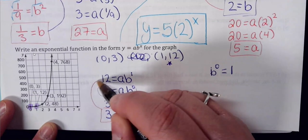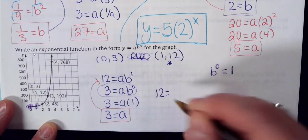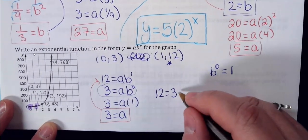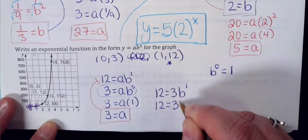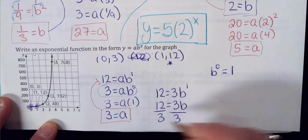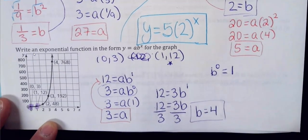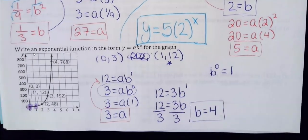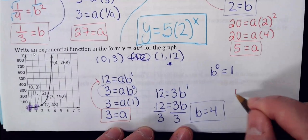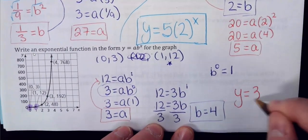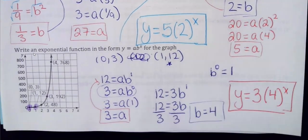Now plug a equals 3 into the other equation: 12 equals 3 times b to the first. B to the first is just b. Divide both sides by 3 — b equals 4. The final equation for the graph is y equals 3 times 4 to the x. Anytime you have a point with x equals zero, use it — you can find the a value immediately without doing a full system.